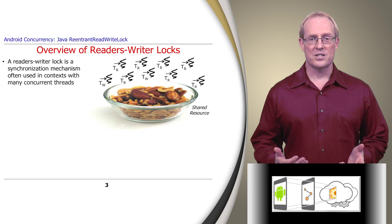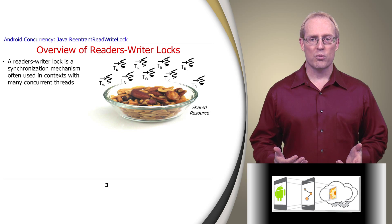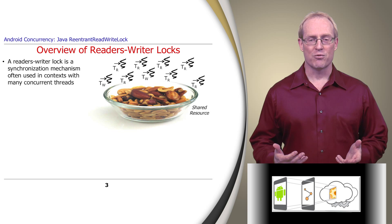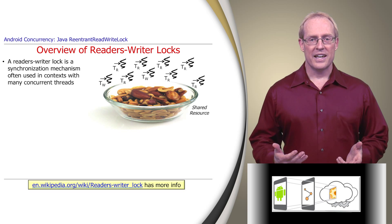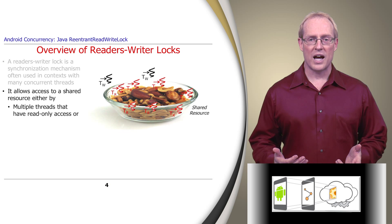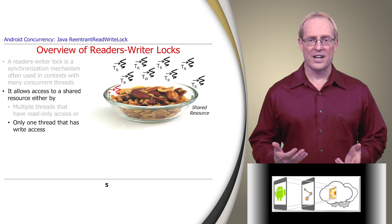A Reader-Writer lock is a synchronization mechanism often used in situations where many threads can concurrently access the same shared resource at one time — some reading and some writing — with the constraint that no thread may access the resource for reading or writing while another thread is in the act of writing to it. It allows access to a shared resource either by multiple threads that have read-only access, or one thread that has write access.